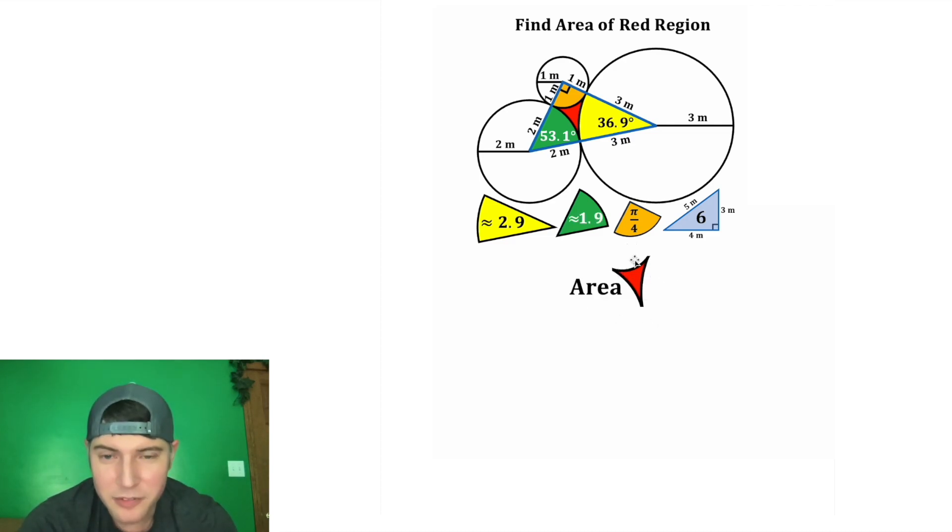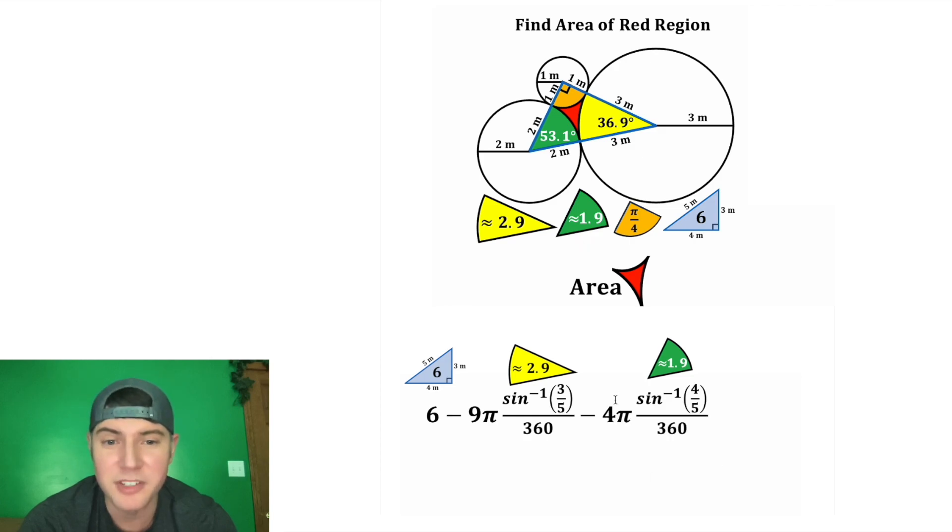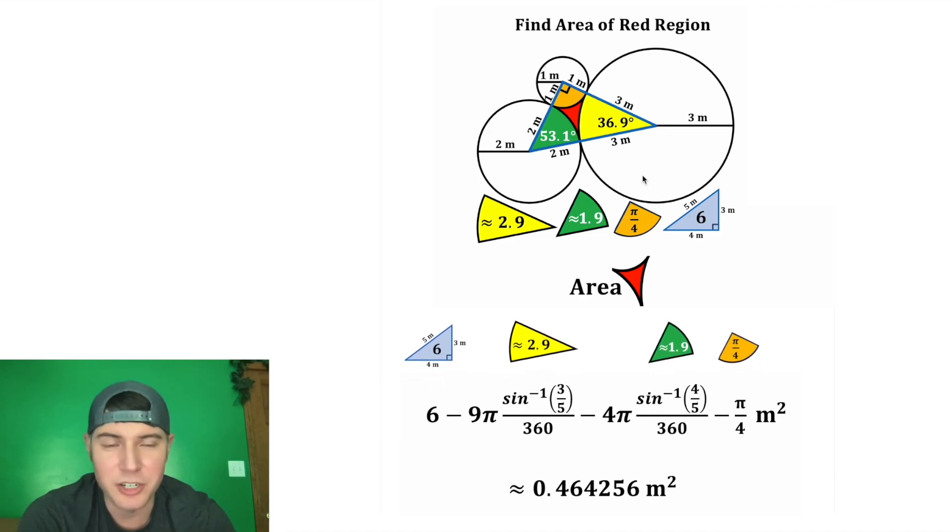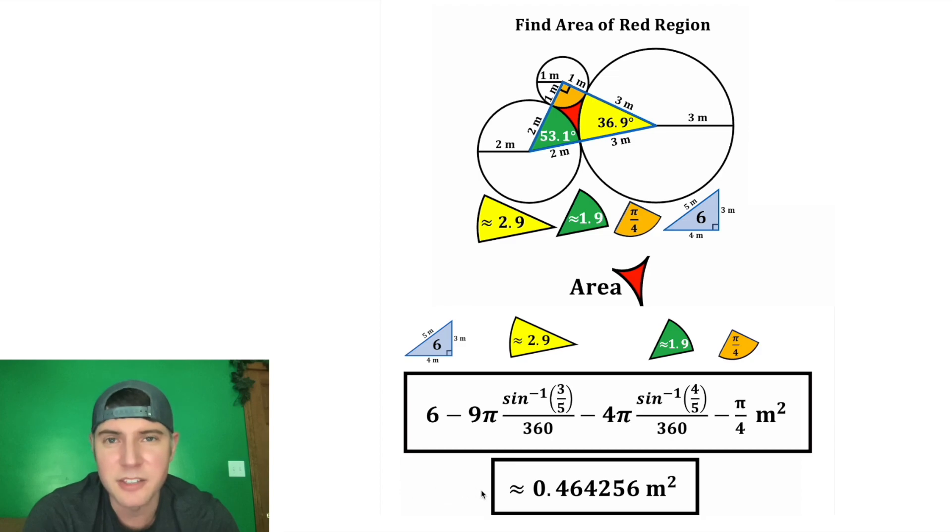And now we have everything we need to find the area of this red region. It's going to be equal to this large triangle minus the yellow region, which was approximately 2.9, but here's the exact value right here, minus the green region, which is approximately 1.9, but this is the exact value for the green region, and then minus the pi over 4, which this is the exact value. And after we do all this math, we get approximately 0.464256 meters squared. And these are the answers to the question. This is the exact area, and this is the approximate area of the red region. How exciting.